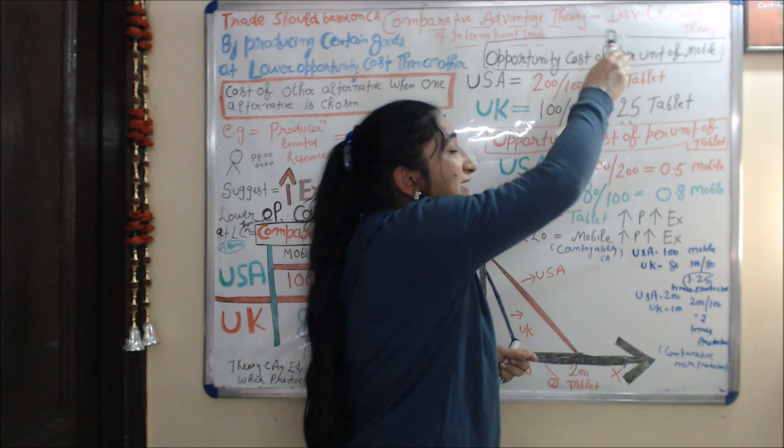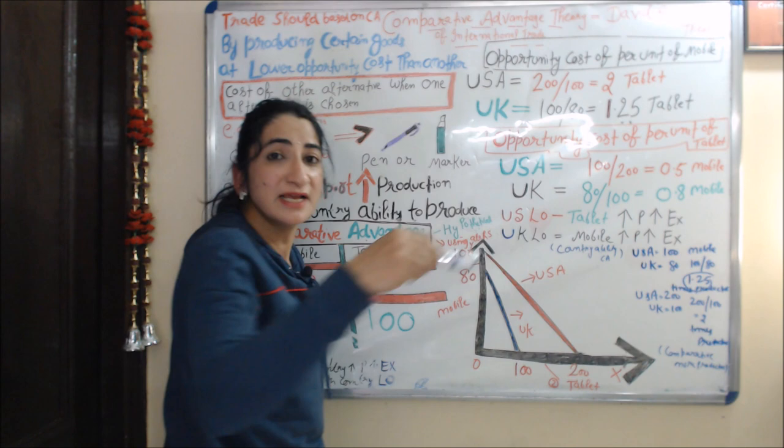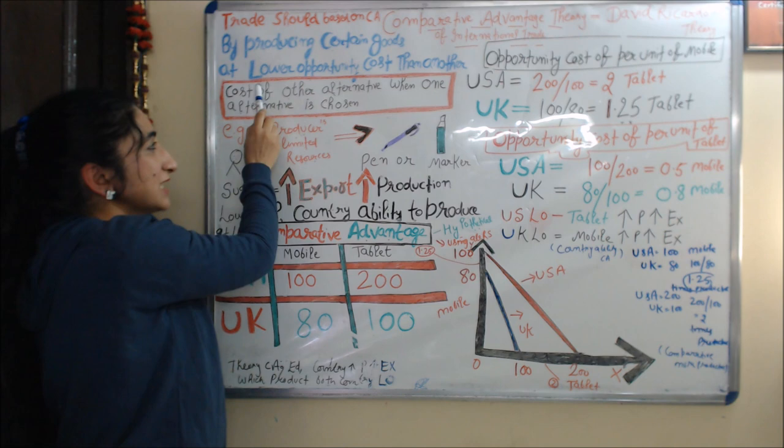According to this theory, trade should be based on comparative advantage. A country can get comparative advantage by producing certain goods at a lower opportunity cost than another country.